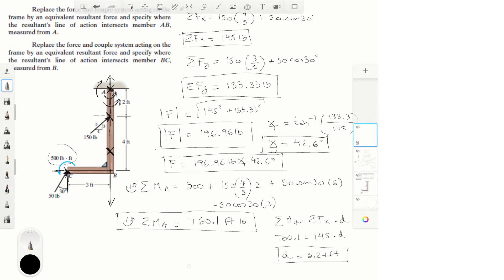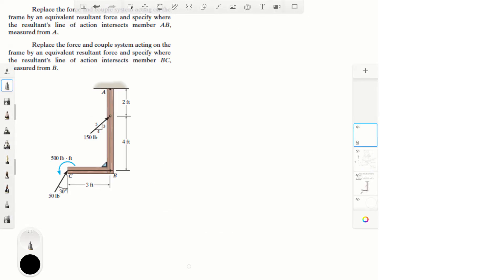Now let's do the second part of the problem, which is the same thing but find where the force would intersect this line denoted by CB. Sum of the moments about B, assuming counterclockwise is positive and B is right here, is equal to: